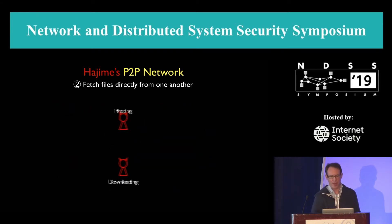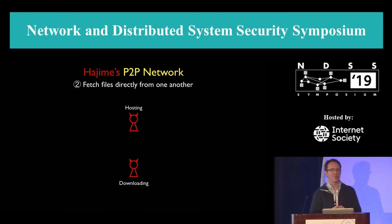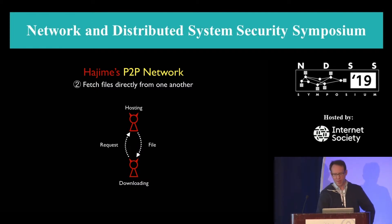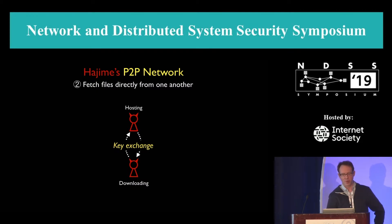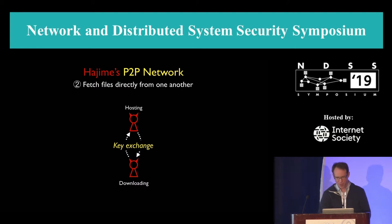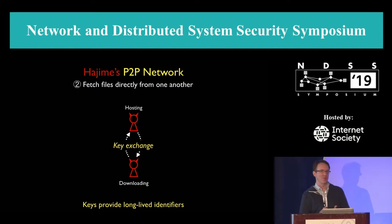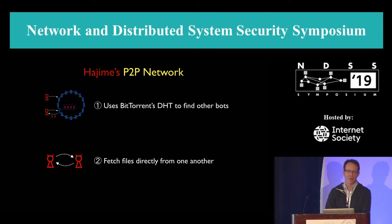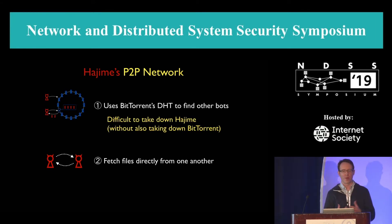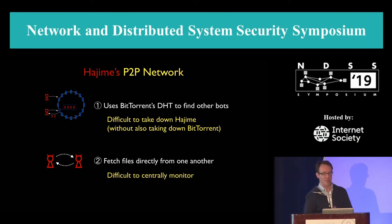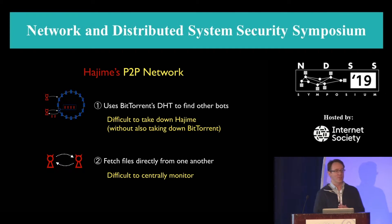The other way Hajime differs is in how it fetches files. It doesn't use BitTorrent per se. Instead, it layers a custom application protocol on top of BitTorrent's UTP protocol. Prior security researchers have reverse-engineered this protocol, but key to our study is that its handshake includes a key exchange between two peer bots. This is great because it provides us with long-term identifiers — those public keys are stable for the lifetime of the .i. In summary, Hajime uses BitTorrent's DHT to find other bots, making takedowns very difficult without collateral damage to legitimate BitTorrent. There's no central position from which to monitor all botnet activity.